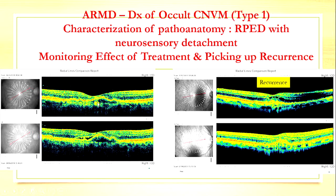Here you have an occult CNVM. You have an RPE detachment. But over here you also have, if you look carefully, a small neurosensory detachment. So it's very important when you do the OCT to go through the entire sequence of the macula — either doing rasters or radial scans, go through all the lines. Don't just see in one area. The entire area must be covered before you say there's activity or there's no activity.